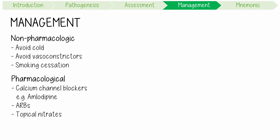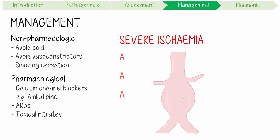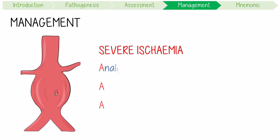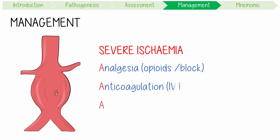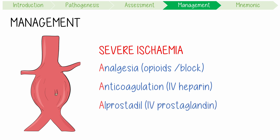For patients with severe ischemia that threatens a digit — remember, this is an emergency, like a AAA — it requires analgesia like an opioid, plus or minus a local anesthetic or regional block. Anticoagulation with intravenous unfractionated heparin is needed due to the associated risk of arterial thrombosis. Alprostadil, which is an intravenous prostaglandin, acts as a potent vasodilator.